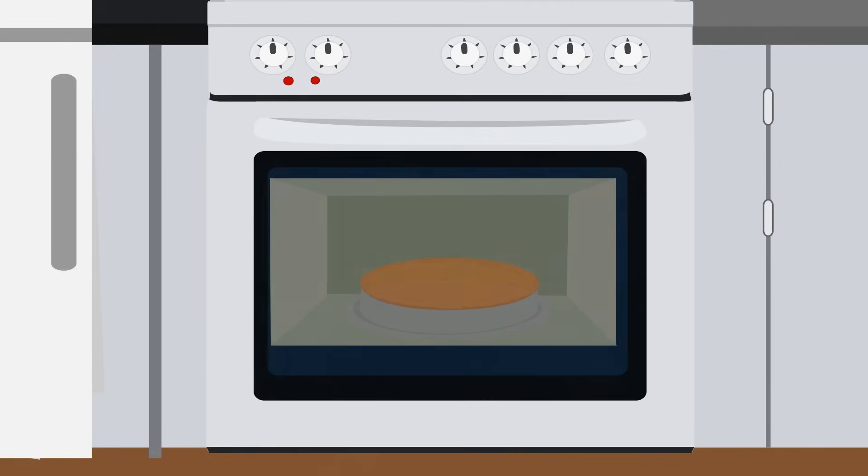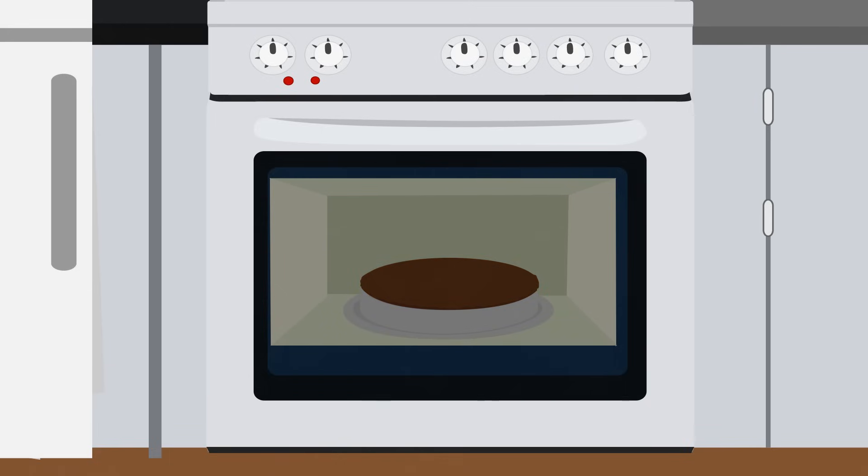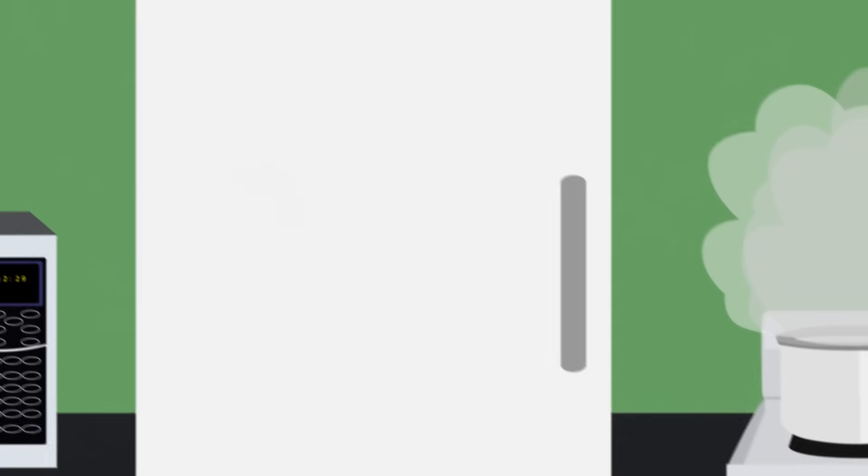When we bake a cake, the ingredients cause a chemical reaction to create the batter, and then another chemical reaction happens when it goes into the oven. Even the way we store our food in the fridge and when things rot away are all chemical reactions.